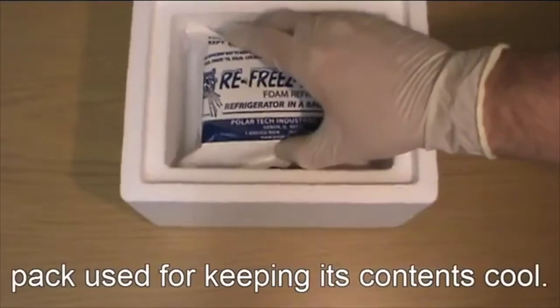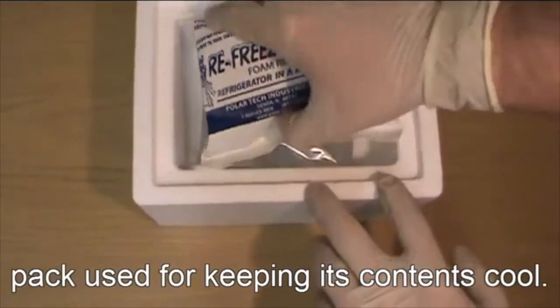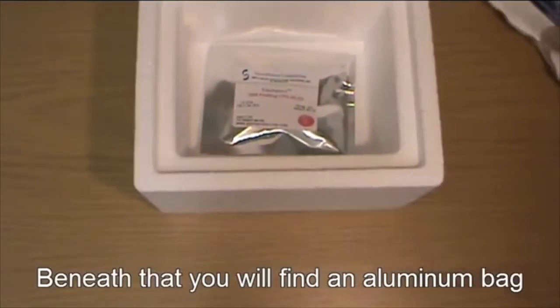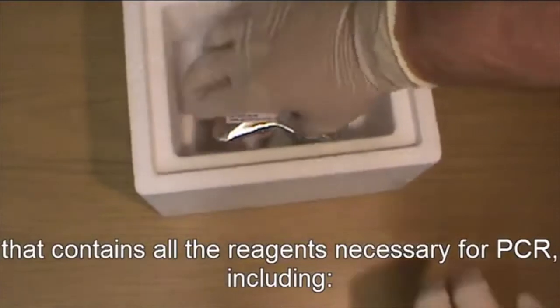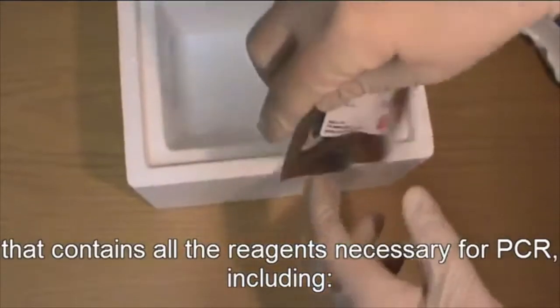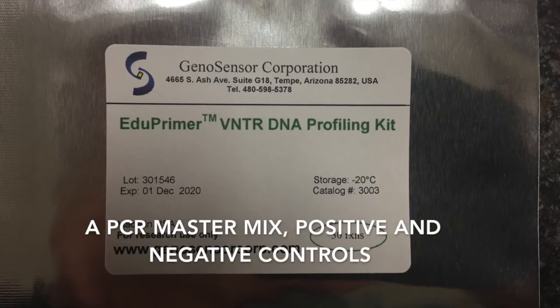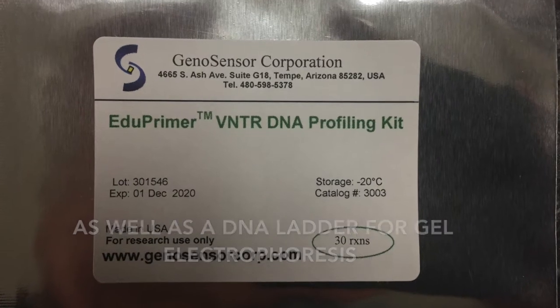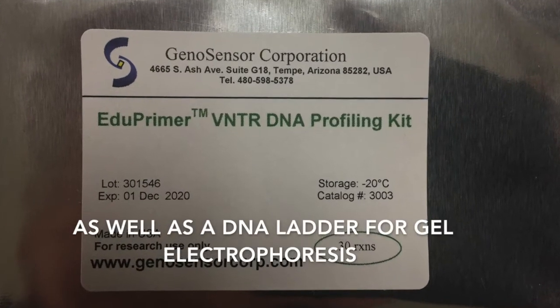Inside the icebox, you will find an ice pack used for keeping its contents cool. Beneath that, you will find an aluminum bag that contains the reagents necessary for PCR, including a PCR master mix, positive and negative controls, as well as a DNA ladder for gel electrophoresis.